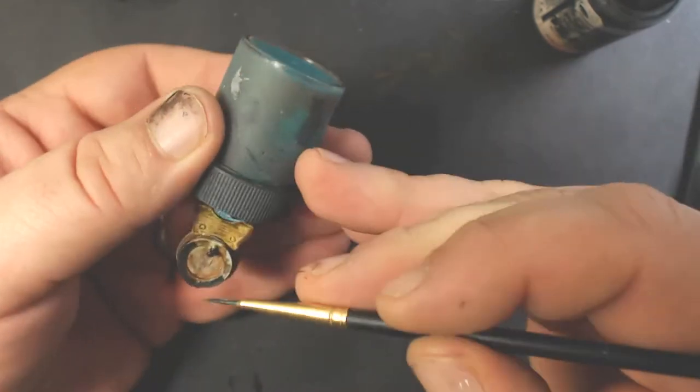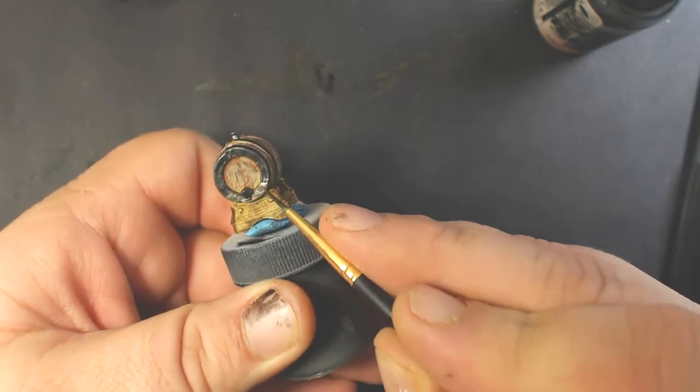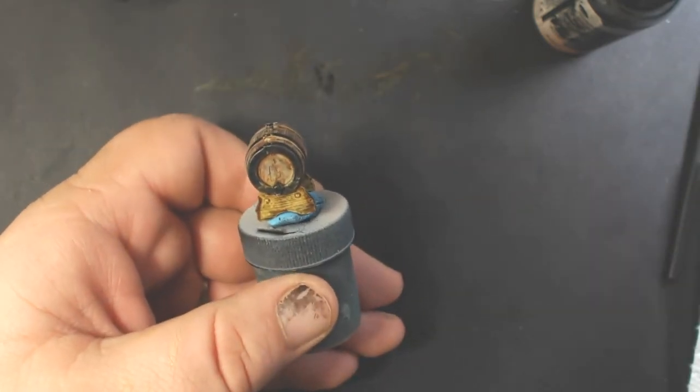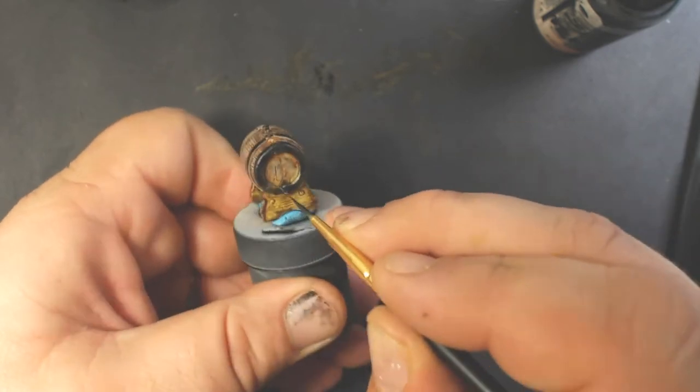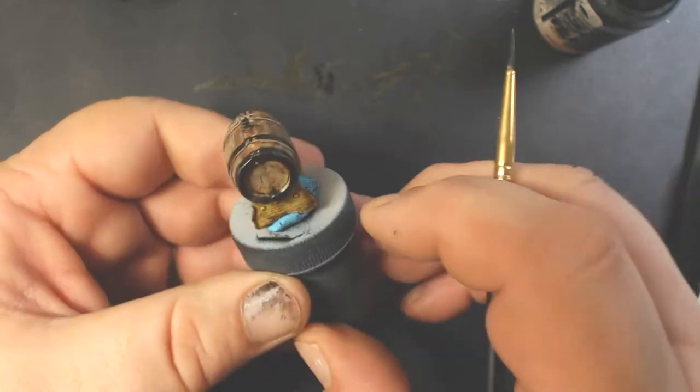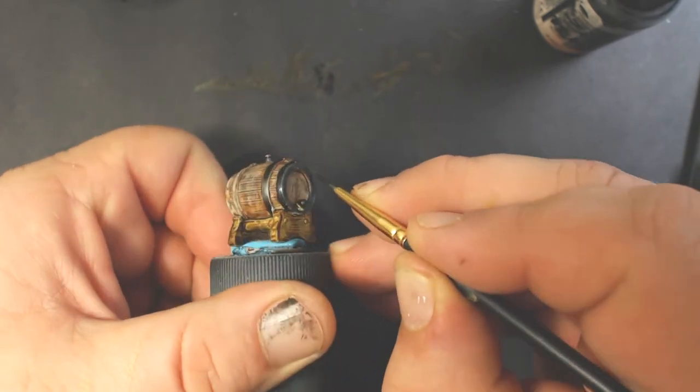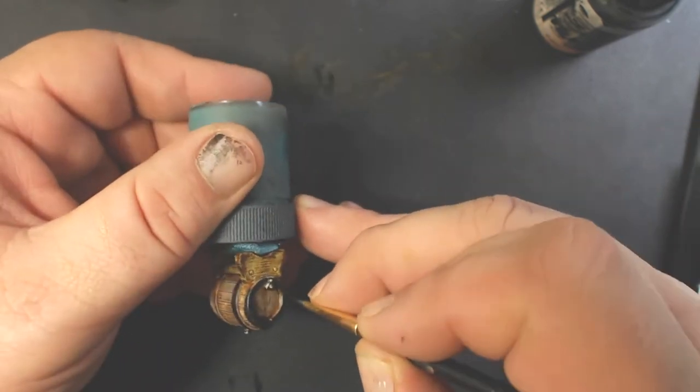You do want to be careful with this step because you don't want to get any of this metal color on the wood. I'm carefully lining around the inside rim.